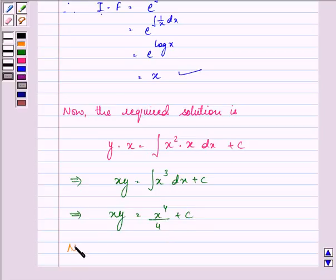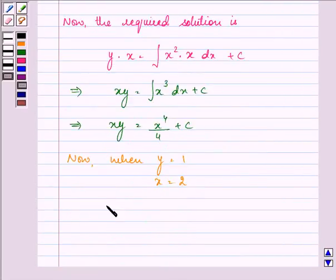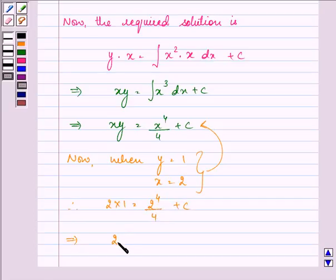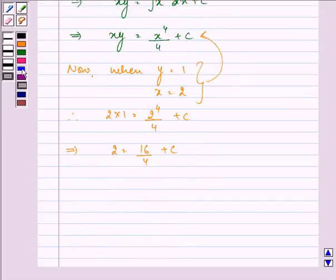Now we know it's given to us that y is 1 when x is equal to 2. On substituting these two values we have 2 into 1 equal to 2 raised to the power 4 upon 4 plus c. That gives us 2 is equal to 16 upon 4 plus c. That further implies the value of c is equal to minus 2.